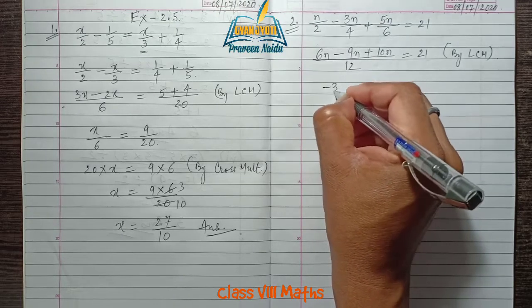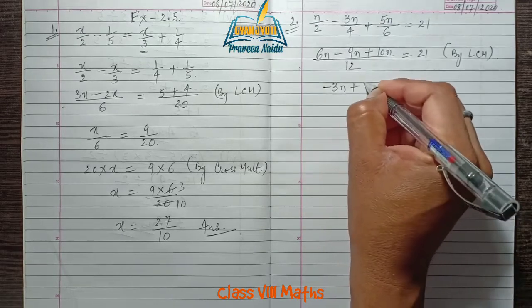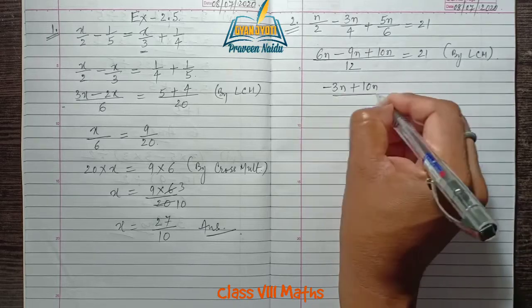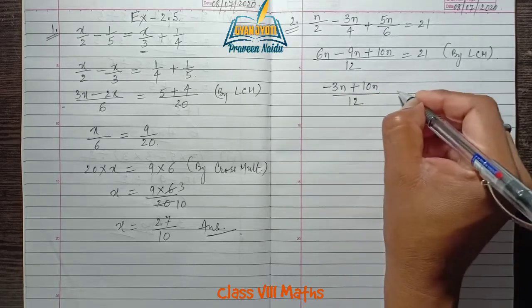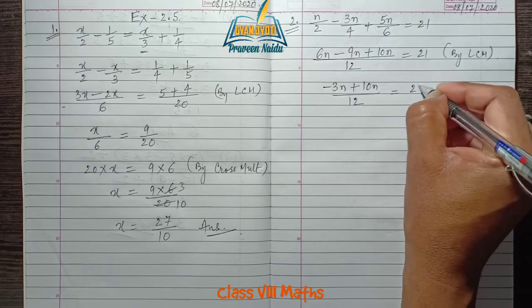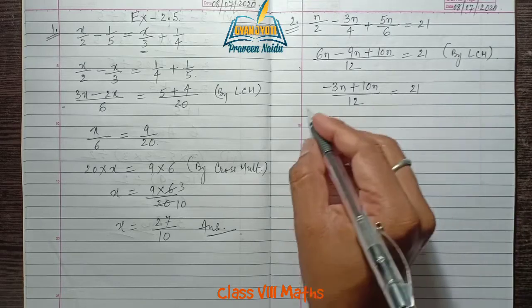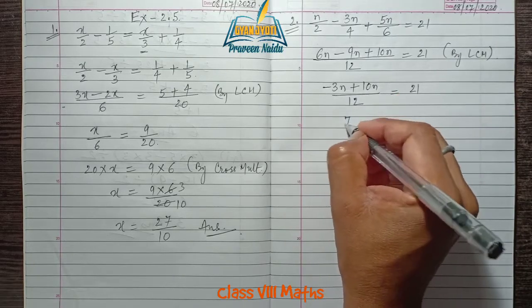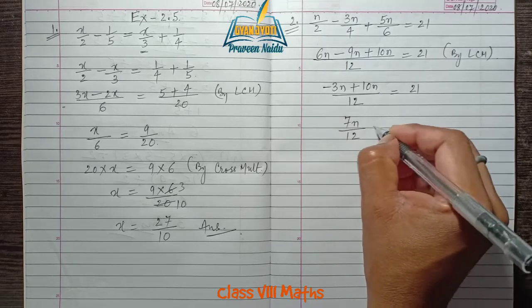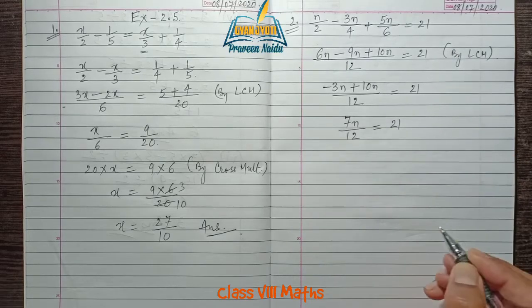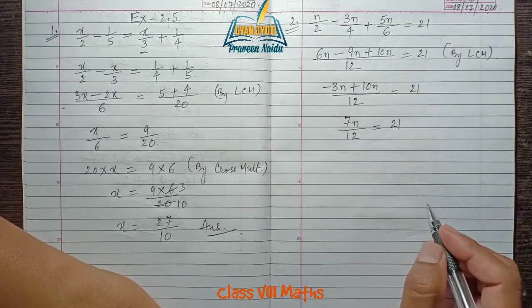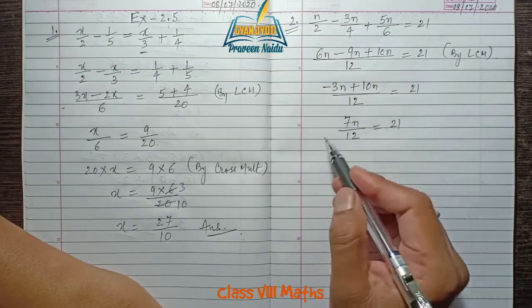Solving further, we have 7n/12 = 21. Now transpose 12 to the right hand side, so 7n = 21 × 12 by cross multiplication.